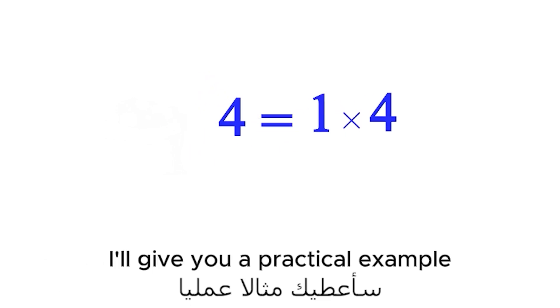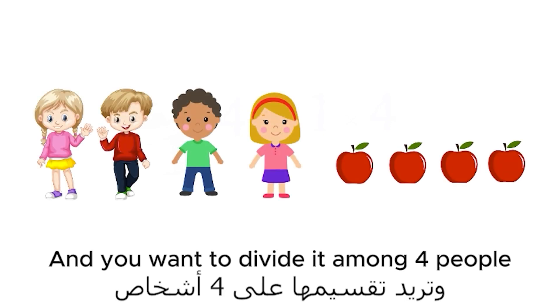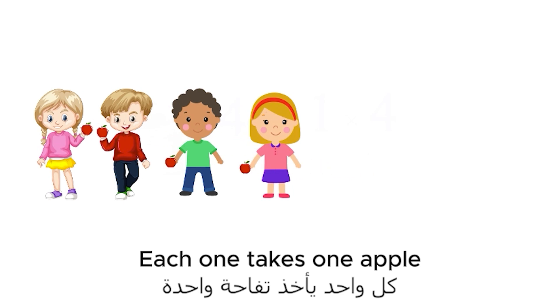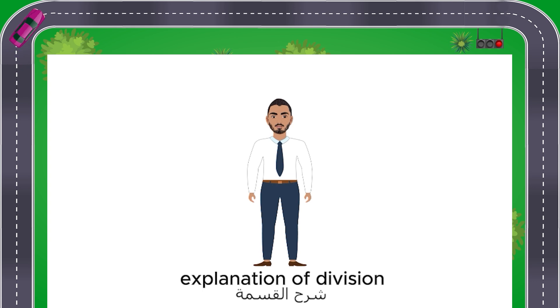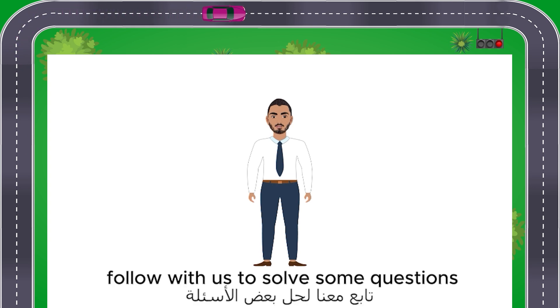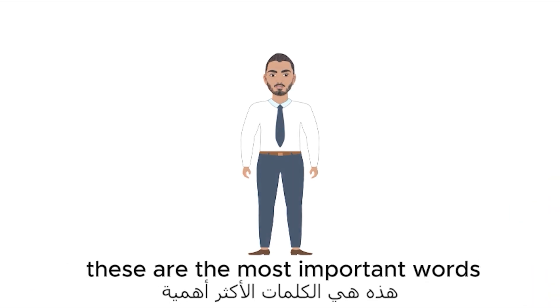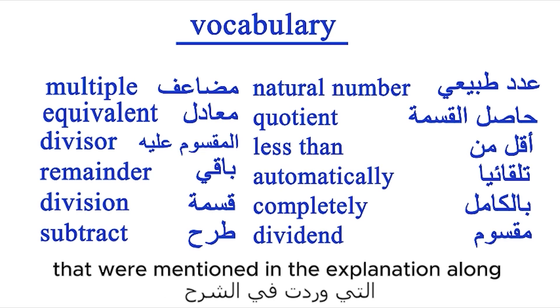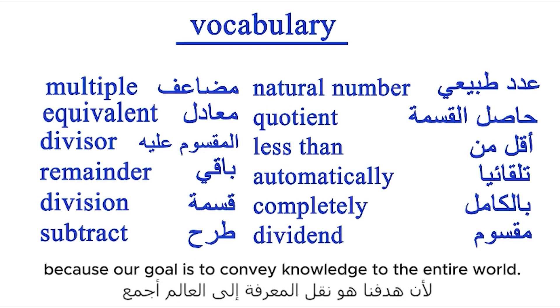For a practical example: if you have 4 apples and you want to divide them among 4 people, each one takes 1 apple. If you are still having difficulty after this detailed explanation, follow along as we solve some questions. Before we begin, here are the most important words from the explanation along with their translation into Arabic, because our goal is to convey knowledge to the entire world.